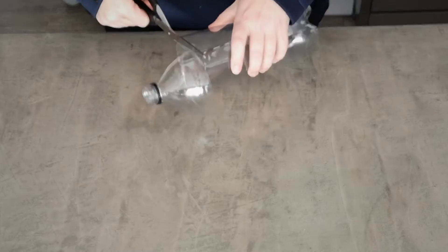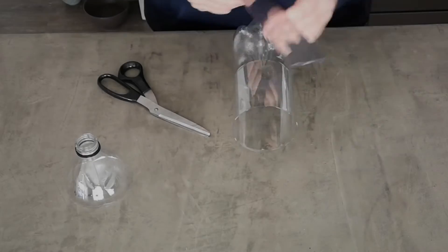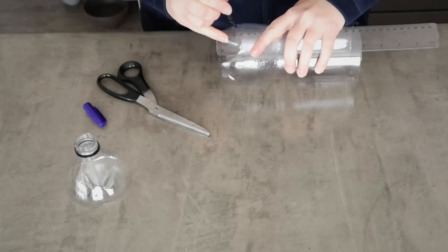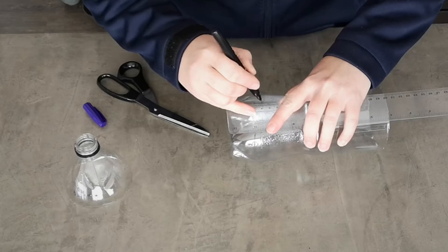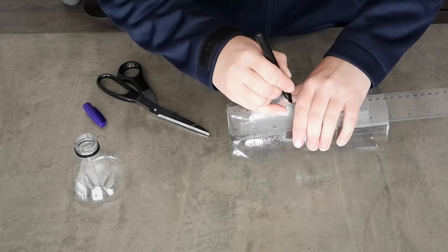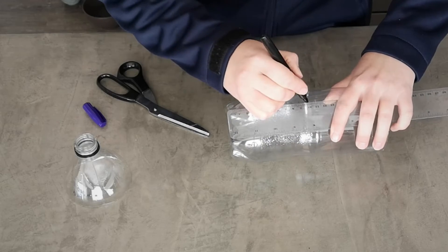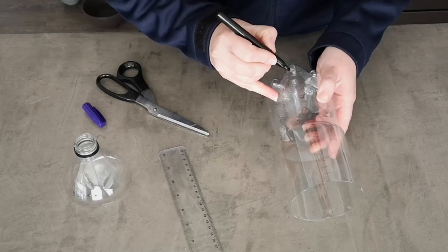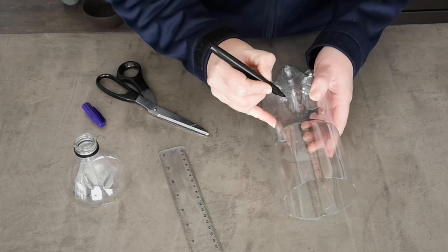If you don't have a bottle, you can use something like a jar instead. We then take our ruler and permanent marker and make a mark for every centimeter.